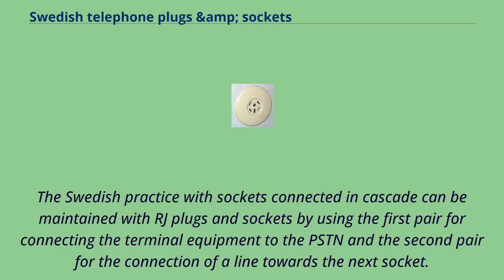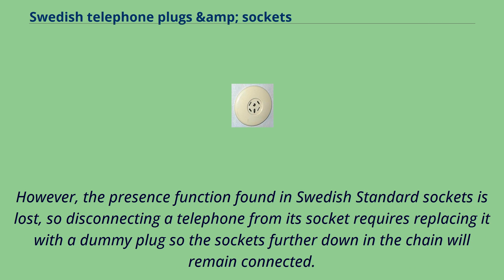The Swedish practice with sockets connected in cascade can be maintained with RJ plugs and sockets by using the first pair for connecting the terminal equipment to the PSTN and the second pair for the connection of a line towards the next socket. However, the presence function found in Swedish standard sockets is lost, so disconnecting a telephone from its socket requires replacing it with a dummy plug so the sockets further down the chain will remain connected.